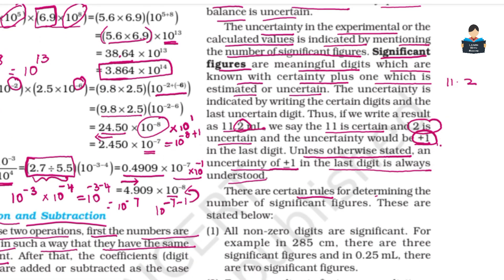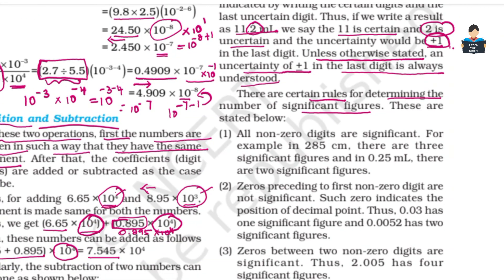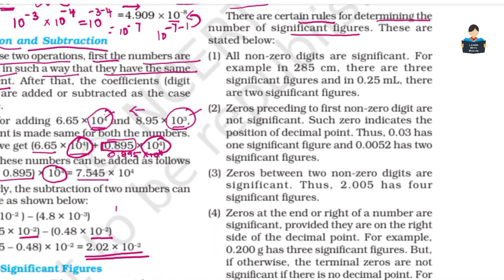There are certain rules for determining the number of significant figures. Rule 1: All non-zero digits are significant.